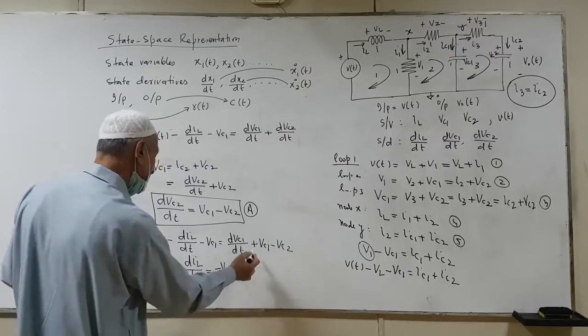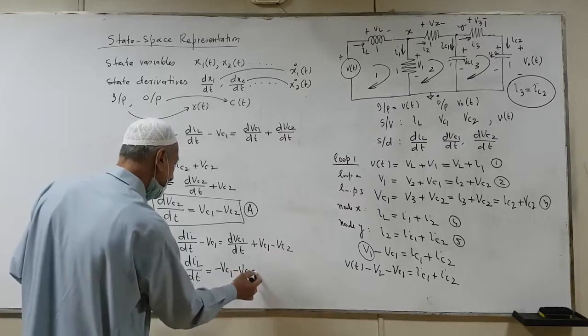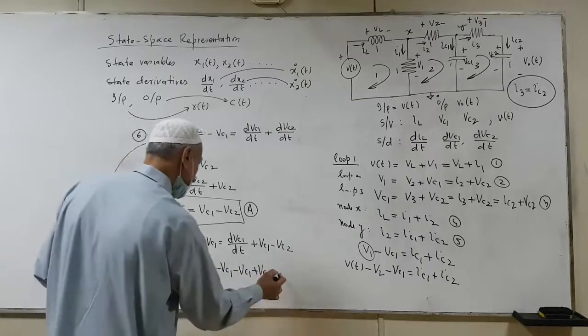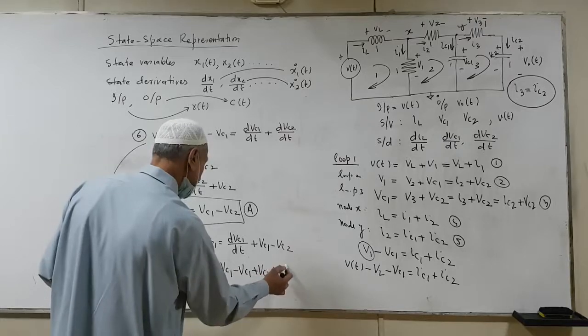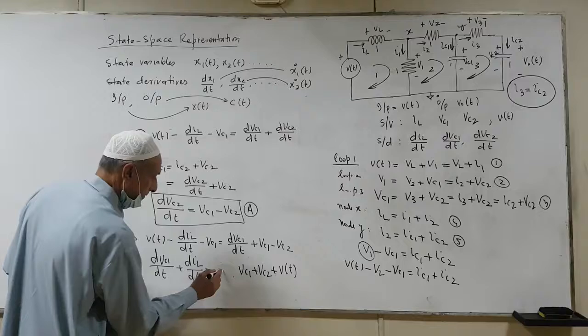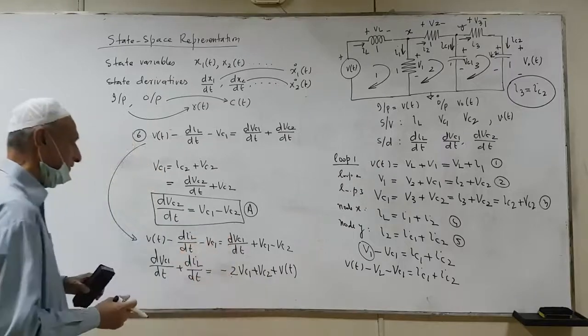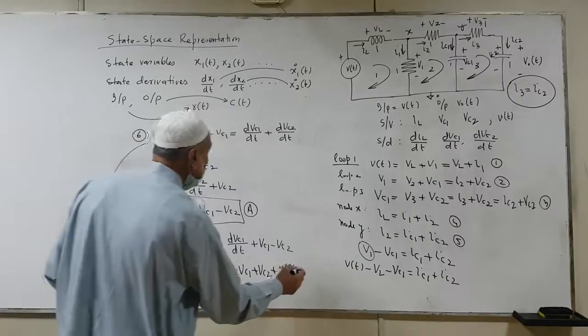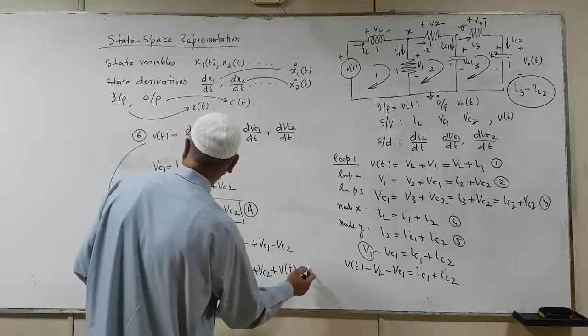So I will have dVc1 by dt plus dIL by dt is equal to minus Vc1. So this one is transformed on the other side plus Vc1. In fact, this is minus Vc1, it becomes minus Vc1. So this one is equation where I was 6, 7.